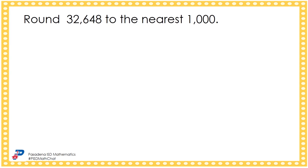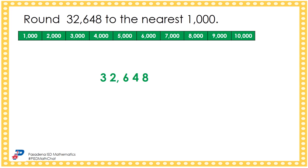Let's round 32,648 to the nearest thousand. These are the consecutive multiples of 1,000. The 2 is in the thousands place and it has a value of 2,000. The next multiple of 1,000 is 3,000.